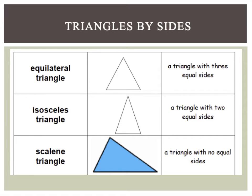First of all, we have equilateral triangles. Equilateral triangles are triangles with three equal sides. So, in an equilateral triangle, all three of these sides are the same exact length.